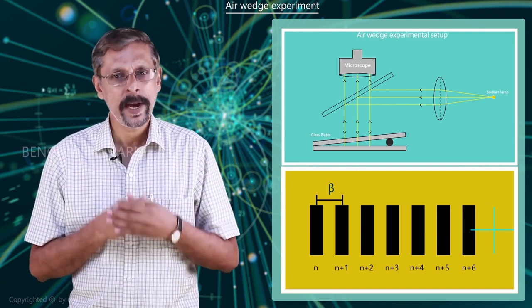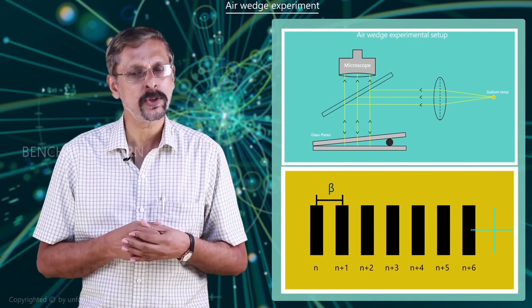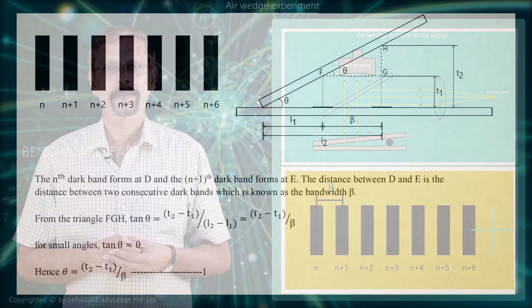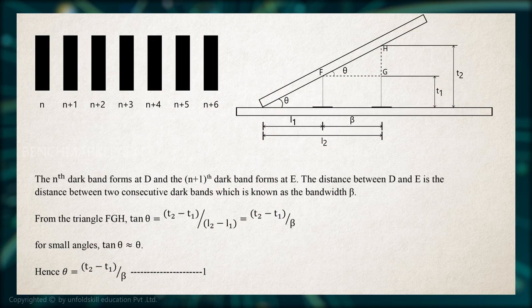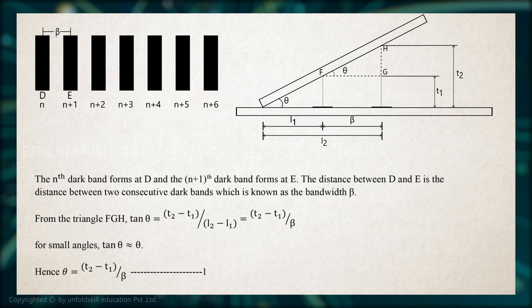Beta is the bandwidth which is the distance between two consecutive dark bands or two consecutive bright bands. The nth dark band forms at D and the n plus 1th dark band forms at E. The distance between D and E is the distance between two consecutive dark bands which is known as the bandwidth beta.